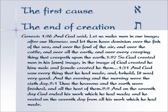Genesis 1:26 — 'And God said, Let us make man in our image, after our likeness. And let them have dominion over the fish of the sea, and over the fowl of the air, and over the cattle, and over all the earth.' So God created man in his own image, male and female created he them. And God saw everything that he had made, and behold, it was very good. And on the seventh day God ended his work and rested. So the very last thing that was created was the human being — he is the end of creation.